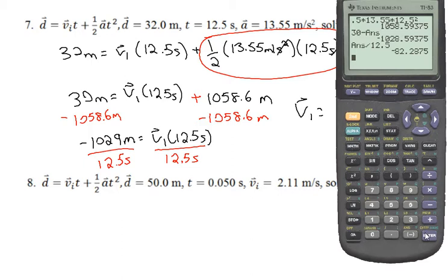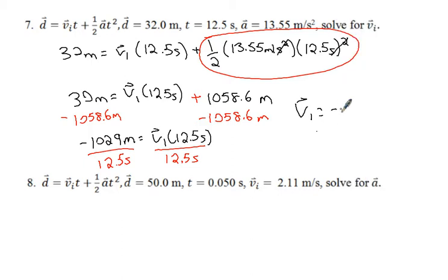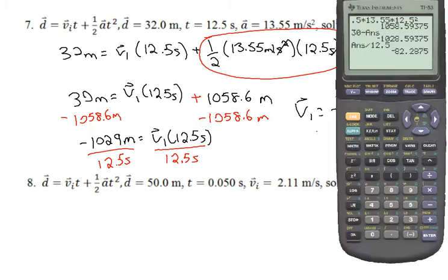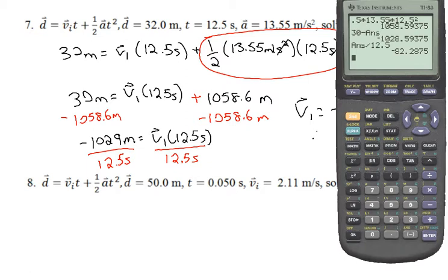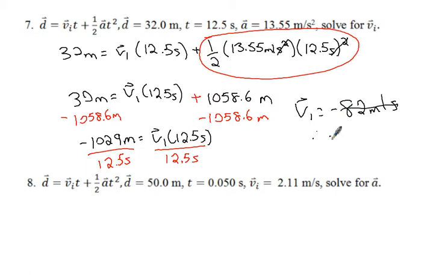Well of course we want three sig digs, so I guess I'd say 82.3 meters per second. So there's one that's at least a few more steps, but the basic idea is the same. We're just using those opposite operations. I hope that was helpful for you. If you have more questions on algebra, definitely check out the website. There's more resources there at www.ldindustries.ca.